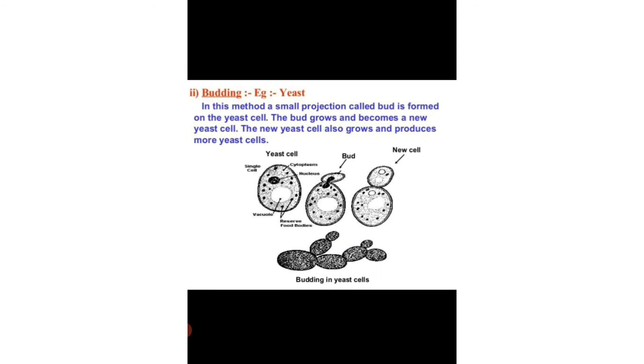Budding is done in yeast. In this method, a small projection called bud is formed on the yeast cell. The bud grows and becomes a new yeast cell. The new yeast cell also grows and produces more yeast cells. You can have a look at the picture.